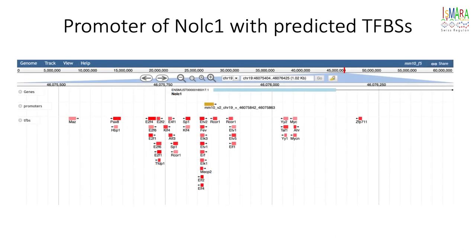If one clicks on the link, one is taken to the genome browser view where one can see the transcription factor binding sites that are predicted in this promoter. The transcription factor's name is indicated at each site and the intensity of the red color indicates the confidence in the predicted binding site.